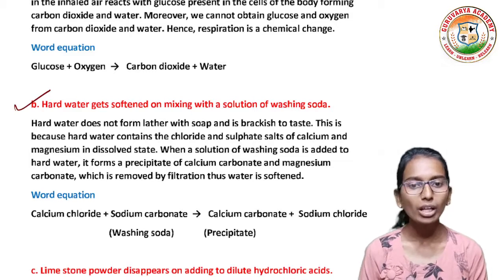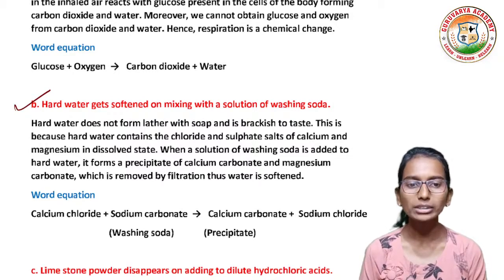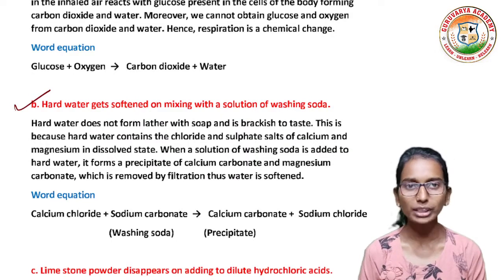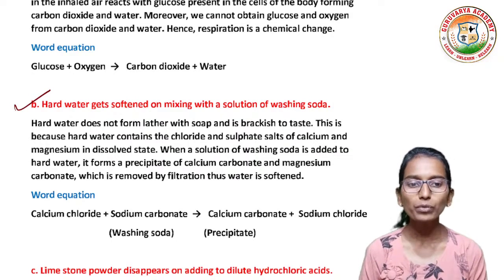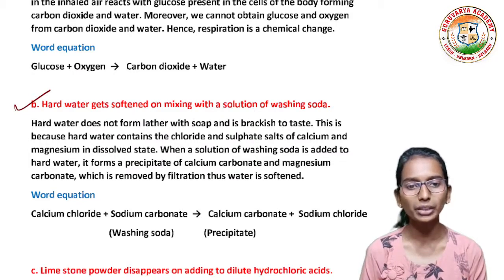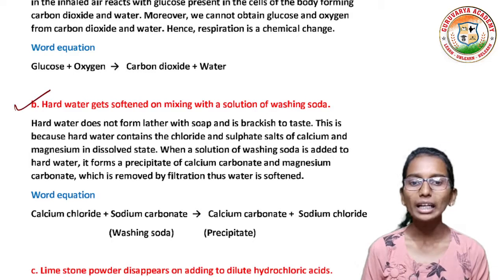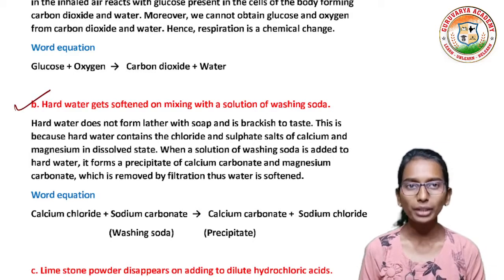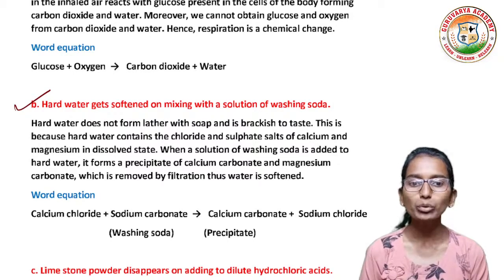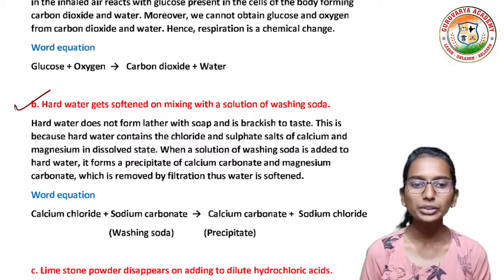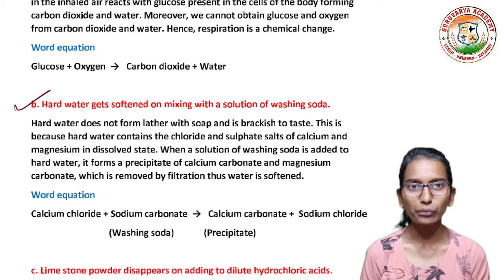Hard water does not form lather with soap. This is because hard water contains chlorides and sulphate salts of calcium and magnesium in dissolved form. When a solution of washing soda is added to hard water, it forms a precipitate of calcium carbonate and magnesium carbonate, which is removed by filtration, thus water is softened.